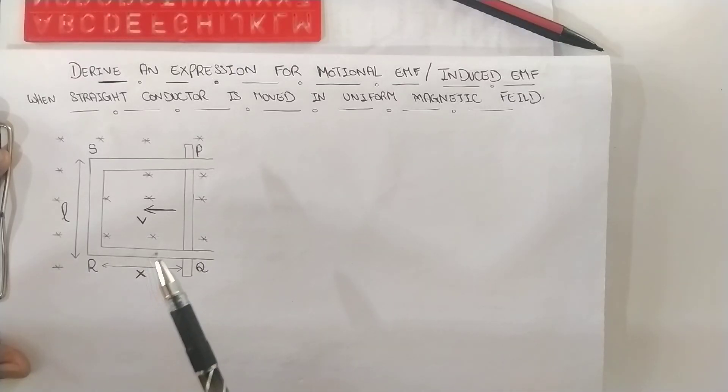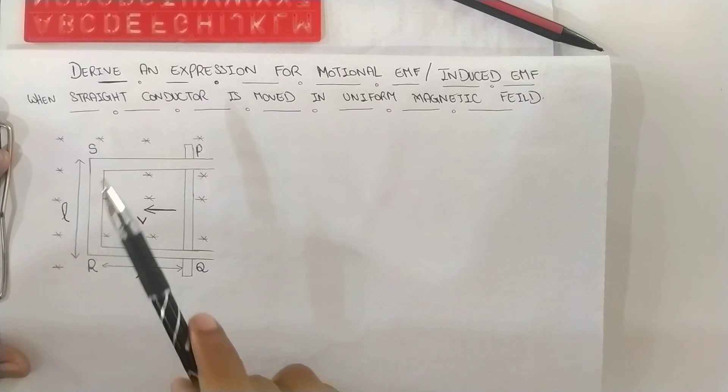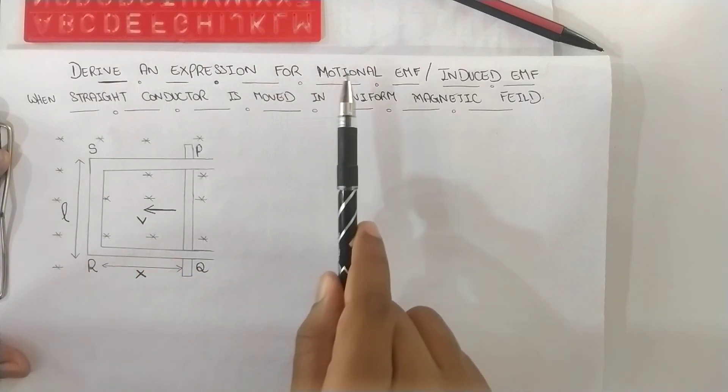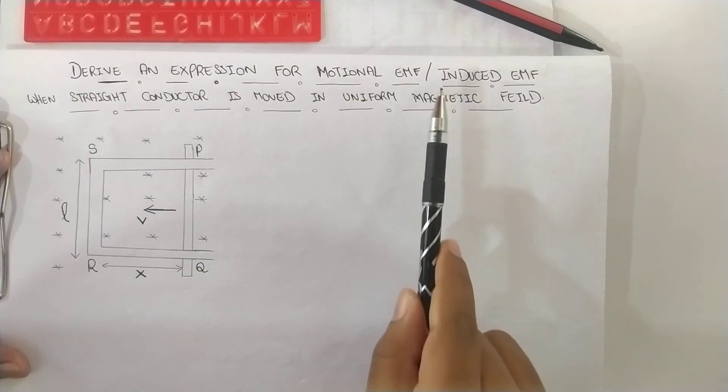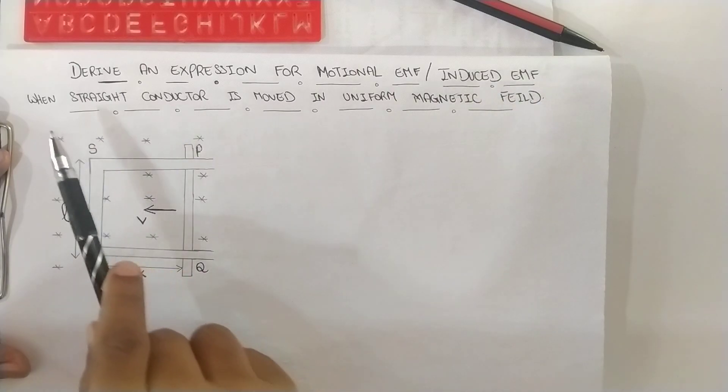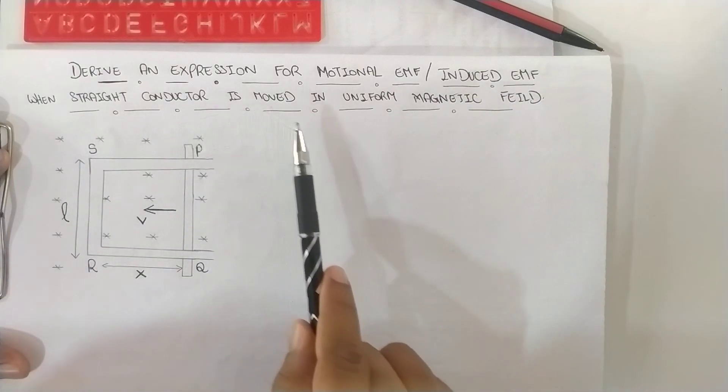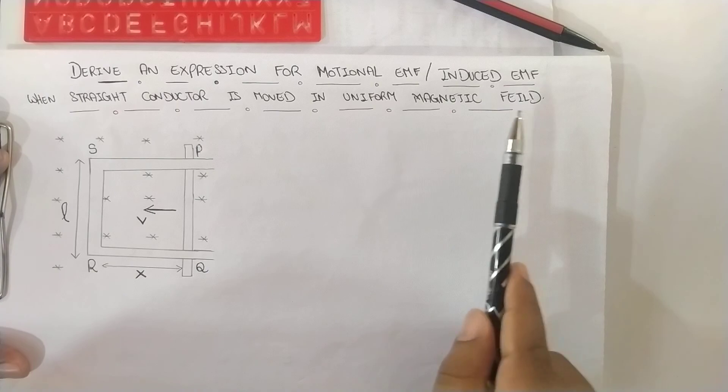Hello everyone, welcome back to my channel. Today we are going to derive an expression for Motional EMF or it is also called Induced EMF when a straight conductor is moved in a uniform magnetic field.